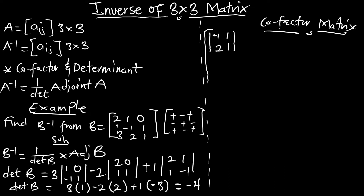For the cofactor, you are not going to add the element. The second one will be negative, and the sub-matrix will be 1, 1, 3, 1. Then the third one, that will be positive, with elements 1, -1, 3, 2. For the second row, we are going to have a negative element with sub-matrix 1, 0, 2, 1.